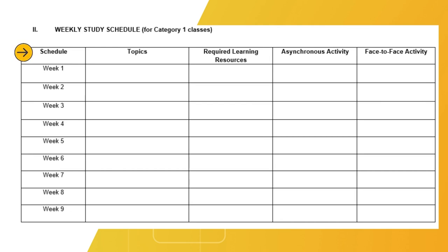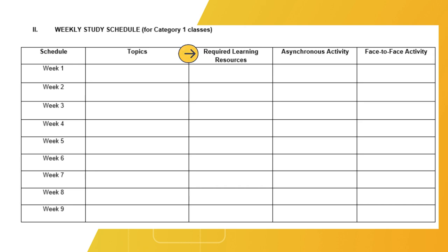In column 1, list the relevant dates. In column 2, list the primary topics and subtopics that will be discussed over the week. Since a modified semester will be implemented, a 9-week modular approach specifying the essential topics of the course, including major exams, at the discretion of the instructor or professor must be determined. In column 3, list the required learning resources for the selected topic. This may include your recorded lecture or video resource, a chapter from a textbook, or a journal article. The title and author of the material must be included.